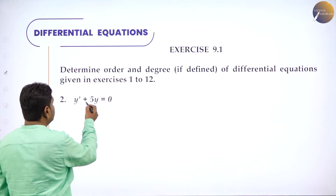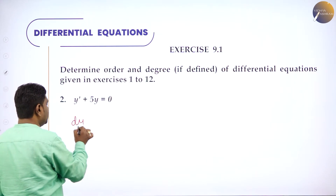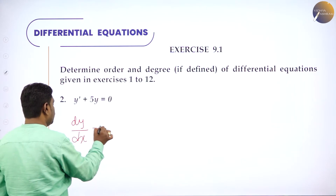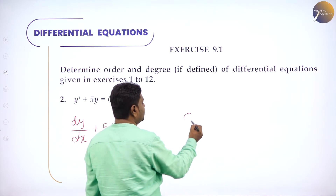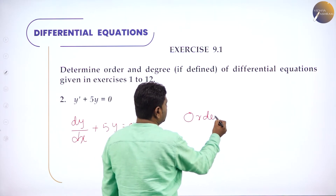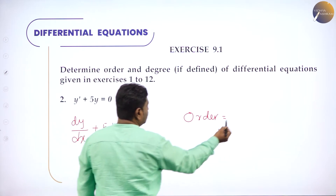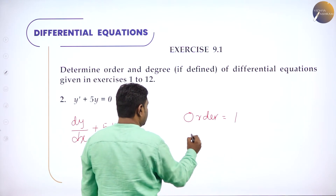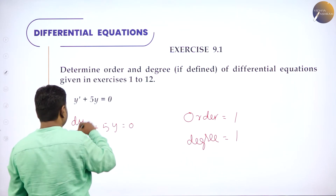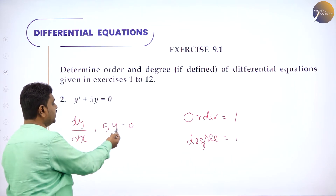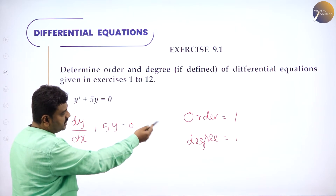Problem 2: y' + 5y = 0, which can be written as dy/dx + 5y = 0. How many times differentiated? dy/dx means one time. Overall power is also 1. So order is 1 and degree is 1.